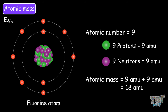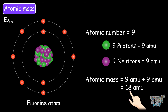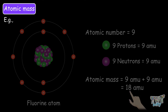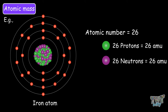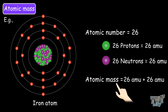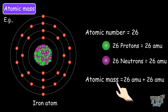Because atomic number 9 means fluorine has 9 neutrons and 9 protons, and the atomic weight of the fluorine atom is the sum of the weight of the neutrons and protons, so atomic weight is 18 amu. Iron: the atomic number of iron is 26, which means it has 26 protons and 26 neutrons. The weight of protons is 26 amu and the weight of neutrons is 26 amu, so the atomic weight of iron is 52 amu.